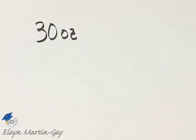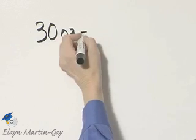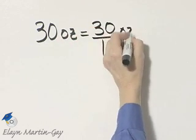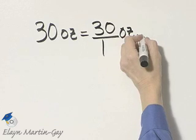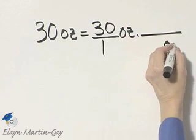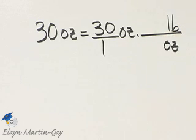Let's convert 30 ounces to pounds. Again, we'll use unit fractions. So if you'd like, you can think of this as 30 over 1, and we are in ounces, and we want to multiply by a unit fraction so that the ounces divide out,